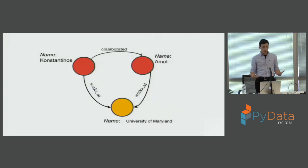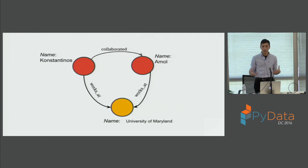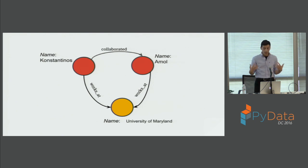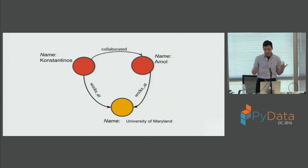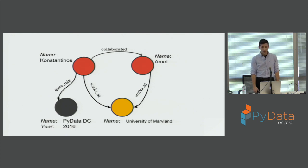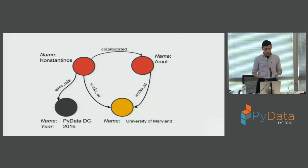Today I'm very excited to talk about the project I've been working on over the past few months: conducting graph analytics over relational databases using a system we're developing called GraphGen. This is work done closely with my advisor, Professor Amol Deshpande. We're all more or less familiar with graph data structures. This is a property graph — entities are nodes connected to each other through relationships represented as edges.